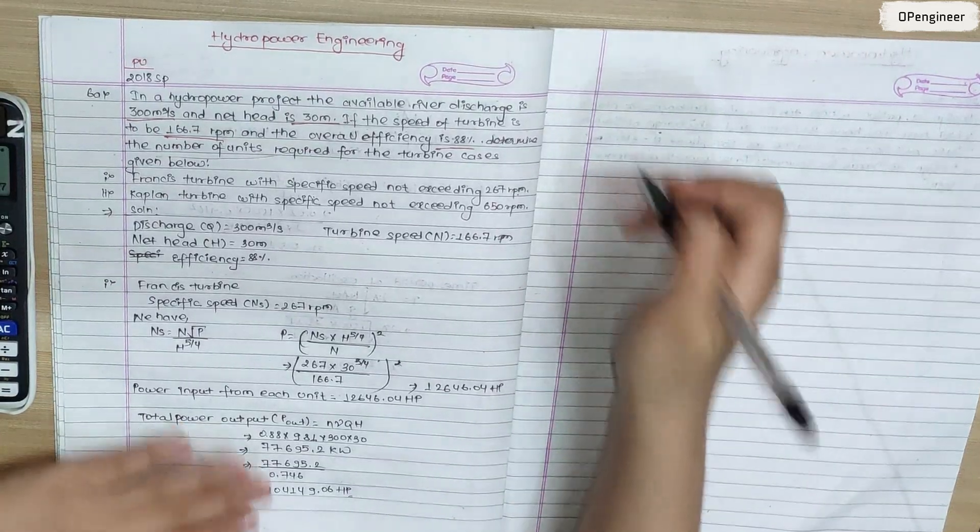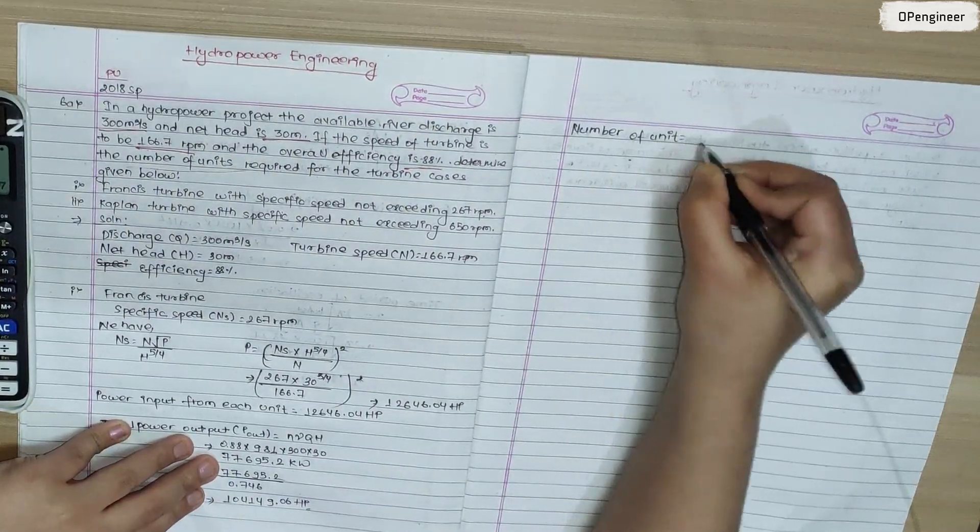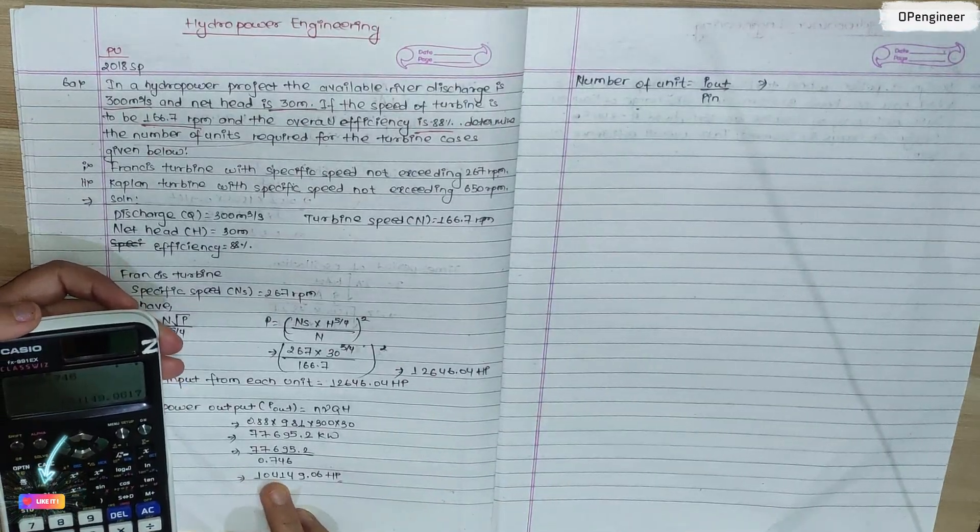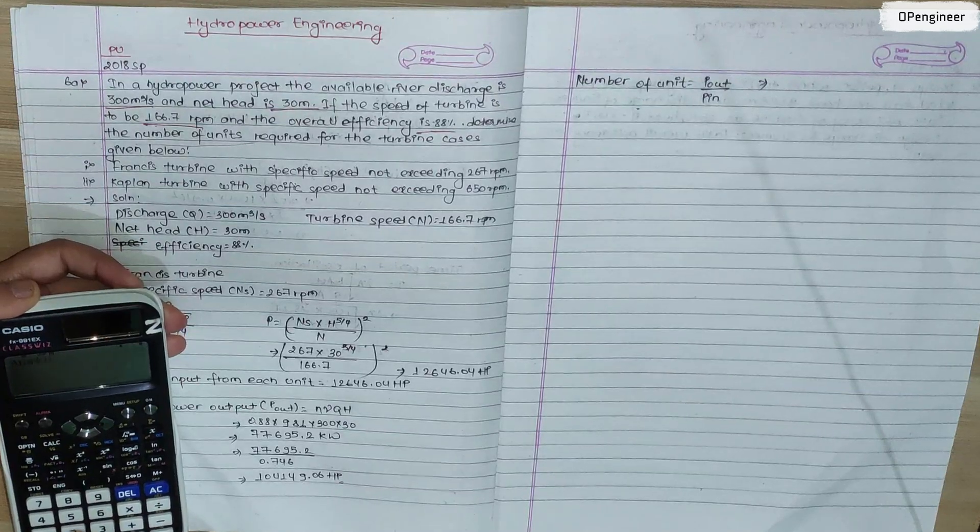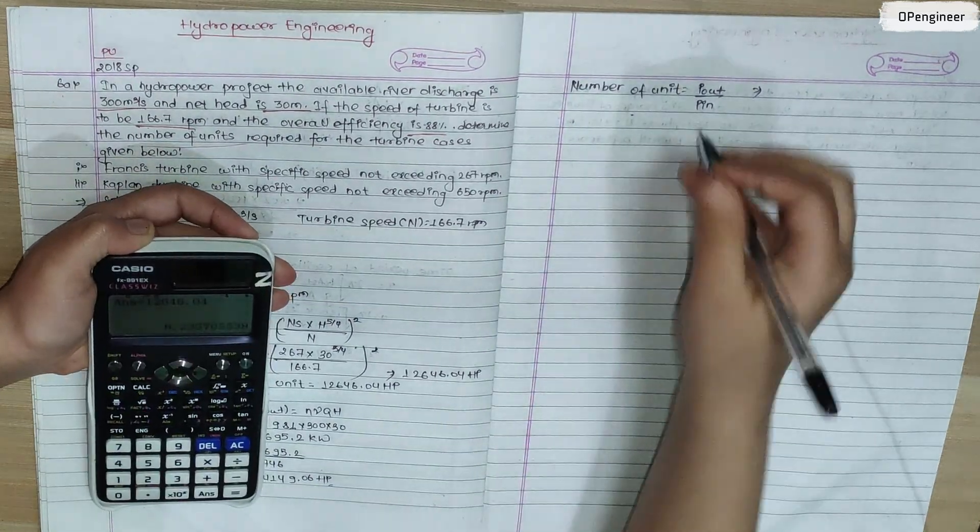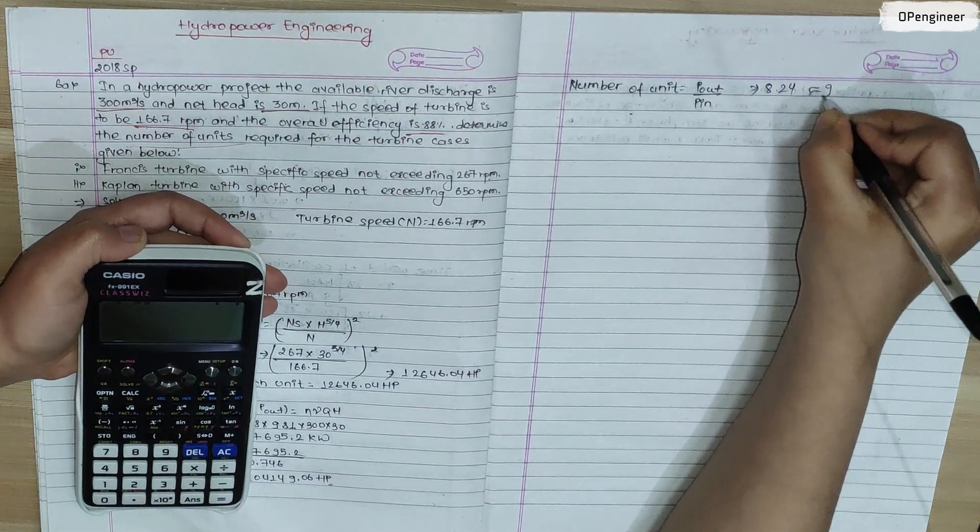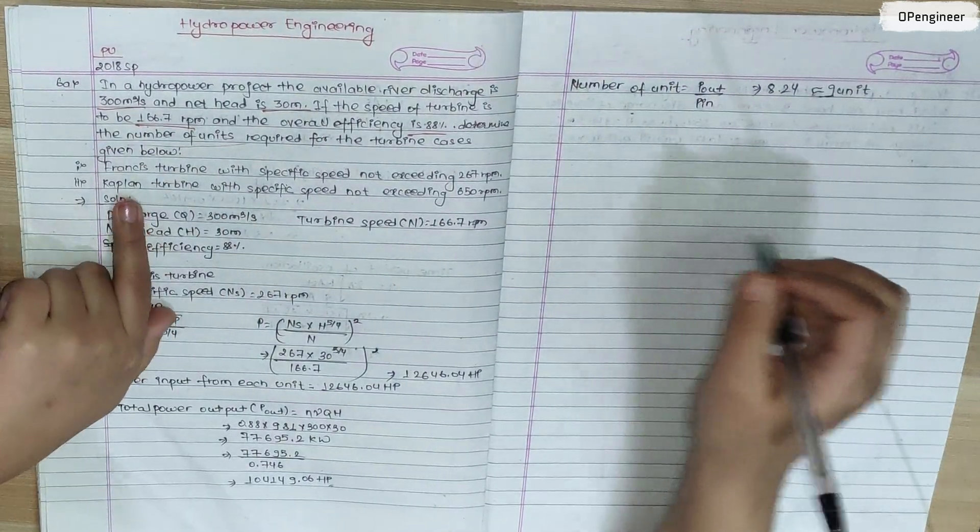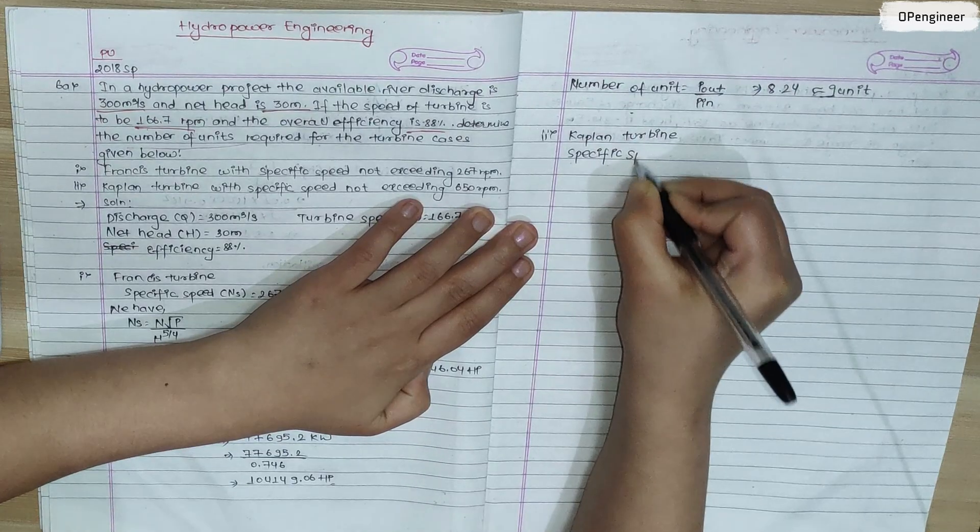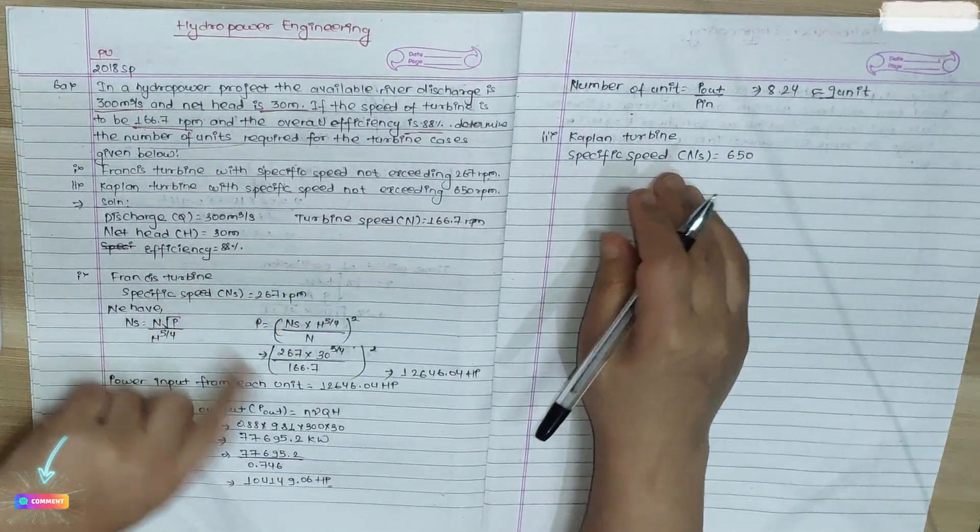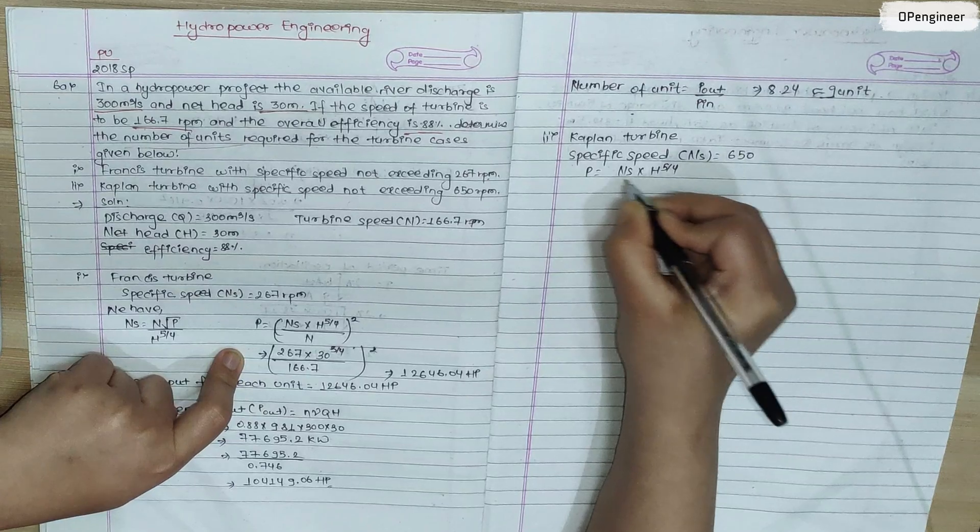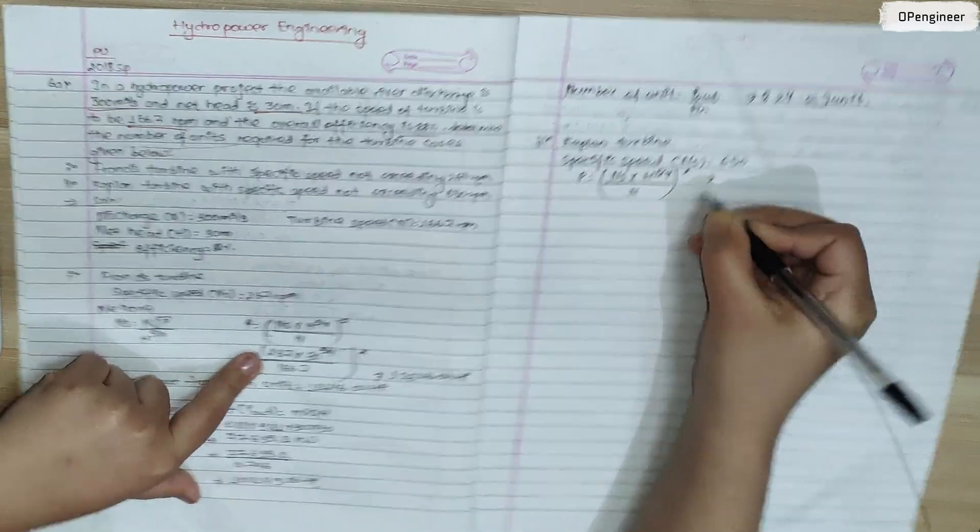Number of units is calculated using the formula: output power divided by input power. So 104149.06 divided by 12646.04, which equals 8.24.